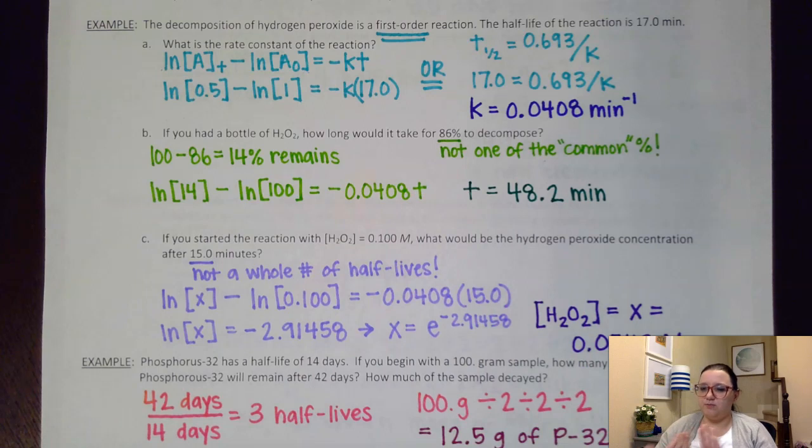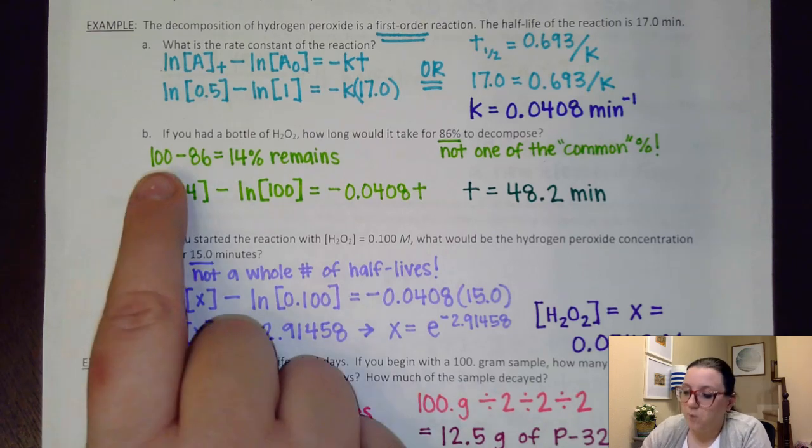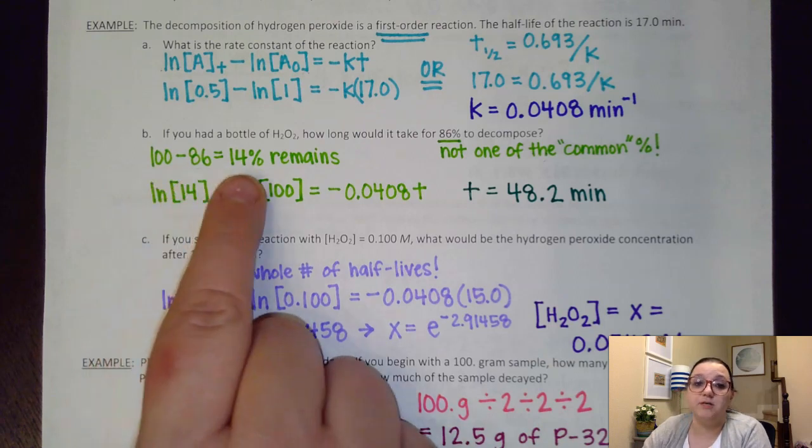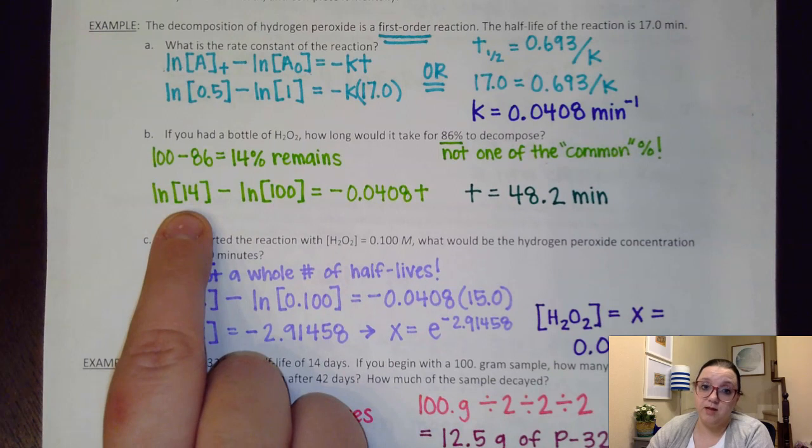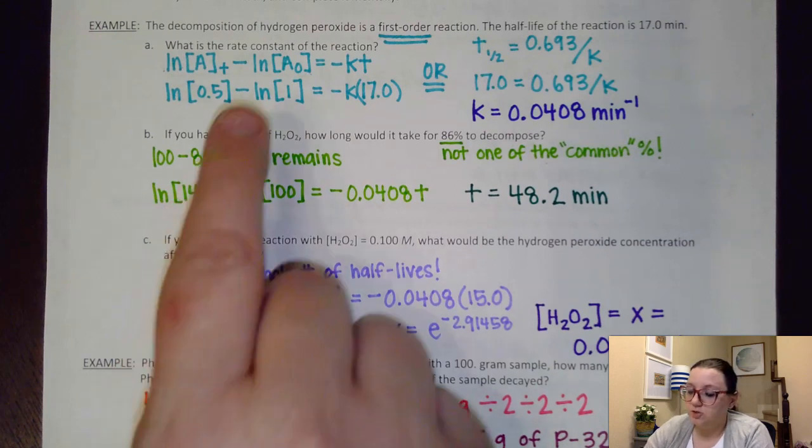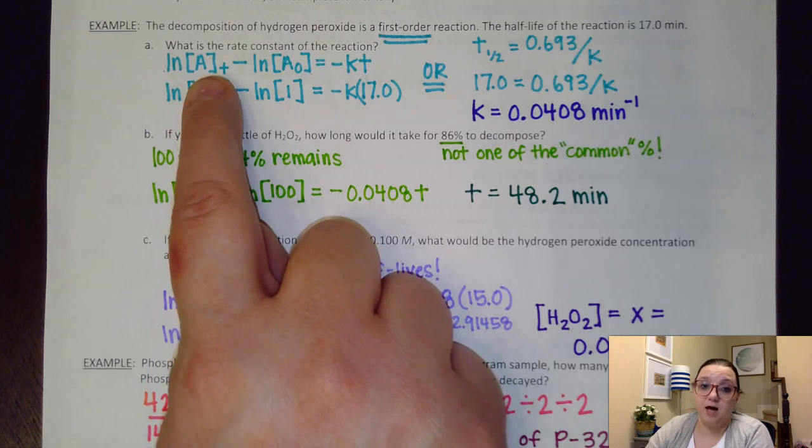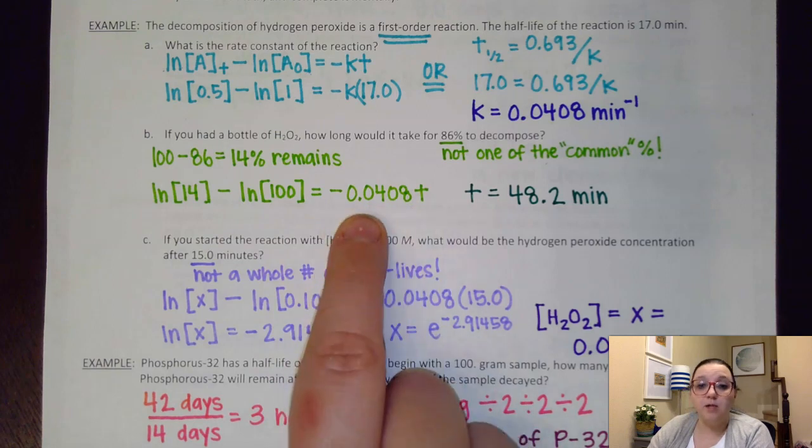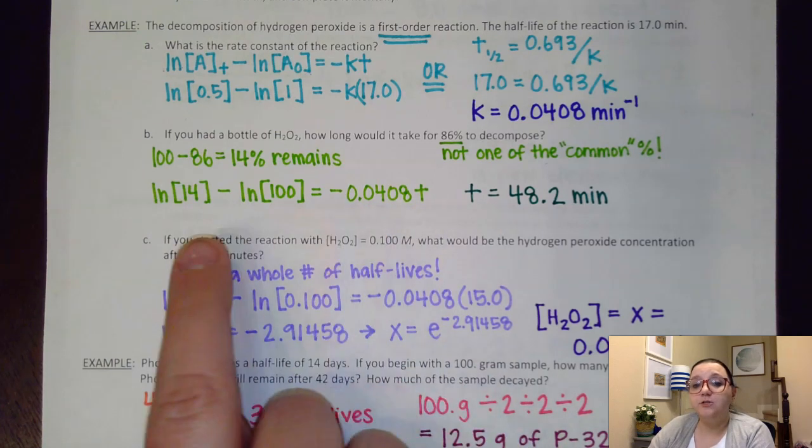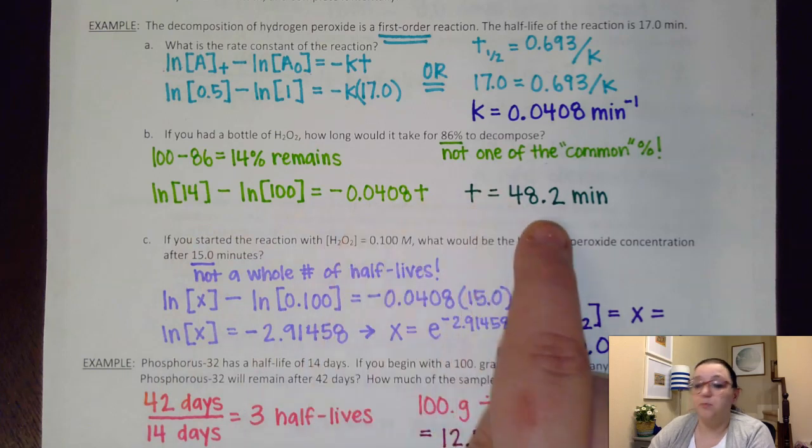So we're not quite to the third half-life mark. The third half-life mark would be 87.5, and this is only 86. So I'm not going to be able to do some sneaky math with this. I'm going to actually have to use my integrated formulas. The first thing I would do is I would say, 100 minus 86 means 14% remains. So if I had 100% to begin with initially, I now only have 14% remaining.